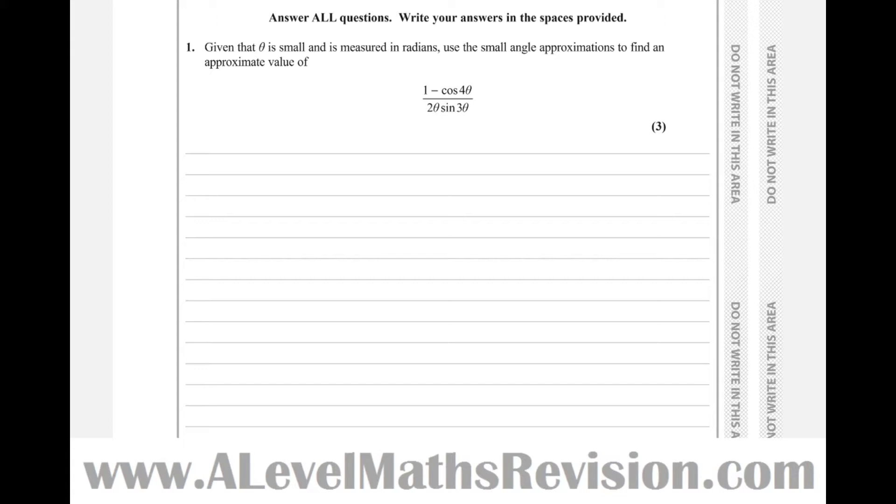What you've got to do here is look to the formula booklet, and you'll learn from the formula booklet that for small angles, sine of an angle is approximately equal to just that angle, and cos of an angle is approximately equal to 1 minus that angle squared over 2. So those are the facts that you're going to need for this question and they're in the formula book.